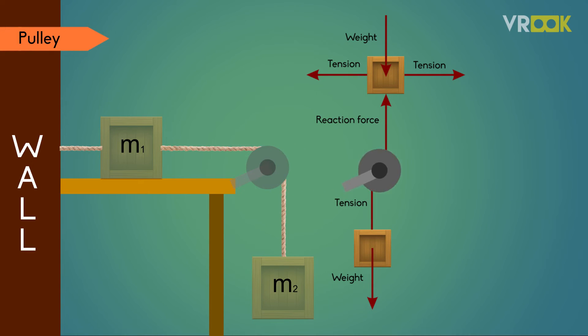At last the pulley. It is assumed to be smooth and massless. Smooth means there will be no frictional forces and we don't have to consider the weight while writing the FBD as it is massless.